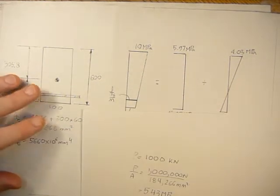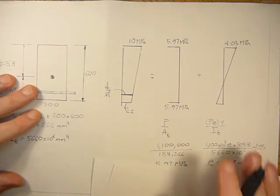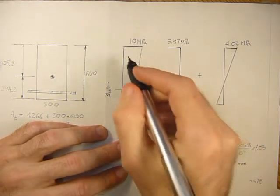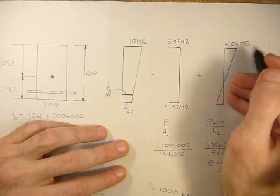So it changes from 5.97 to 5.43 MPa. And then what we do is subtract the 10 MPa minus that stress to get the stress for the pure bending.